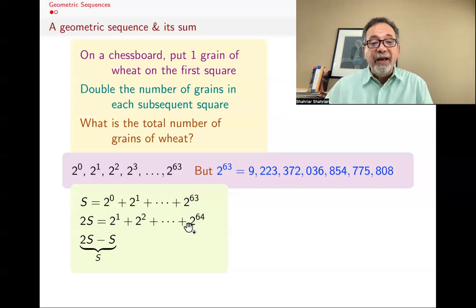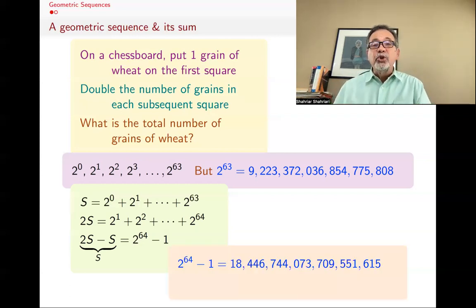The only things that are left is this 2^64 and that 2^0, that one. So really, what we have is that 2S - S, which is S, is 2^64 - 1. So we found this. The sum of those things is 2^64 - 1, and that's a huge number.